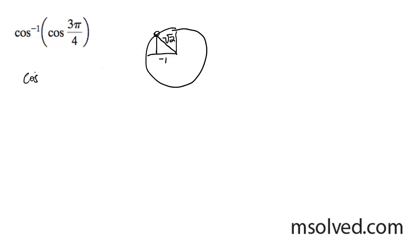So this is going to be the same thing as cosine inverse, and then the answer of what we got there, so negative 1 over root 2, or negative root 2 over 2, but I'll just go with this for now.